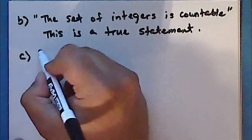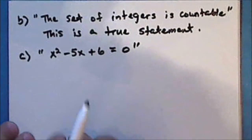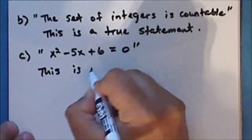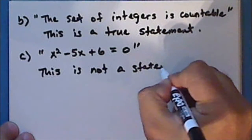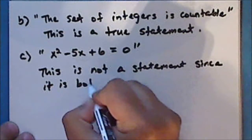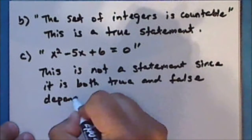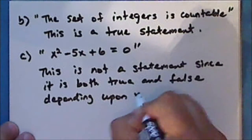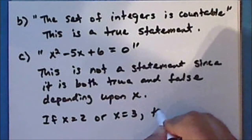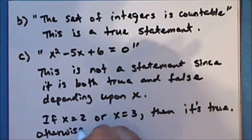Now consider the sentence: x squared minus five x plus six is equal to zero. As it stands, without a quantifier or qualifier, this is not a statement, since it is both true and false — if x equals two or x equals three it's true, otherwise it's false.